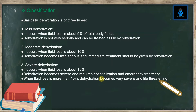Dehydration occurs when fluid loss is more than what is consumed. Classification: Dehydration is of three types. Number one is mild dehydration — it occurs when fluid loss is about 5% of total body fluids. This is not very serious and can be treated easily just by rehydration. Number two, moderate dehydration — it occurs when fluid loss is about 10%. It becomes a little serious and immediate treatment should be given by rehydration.